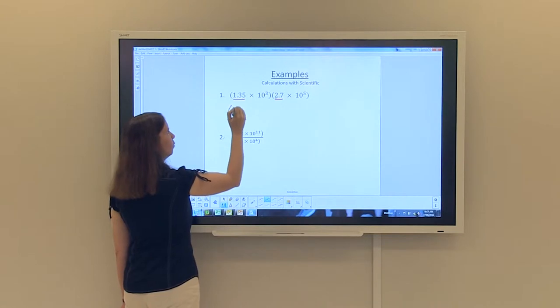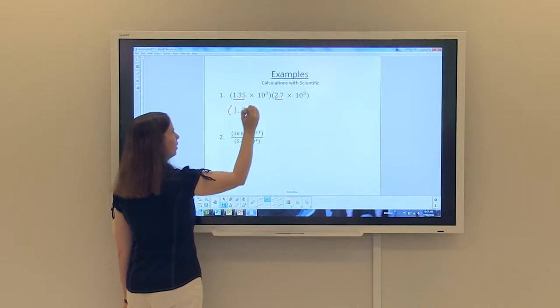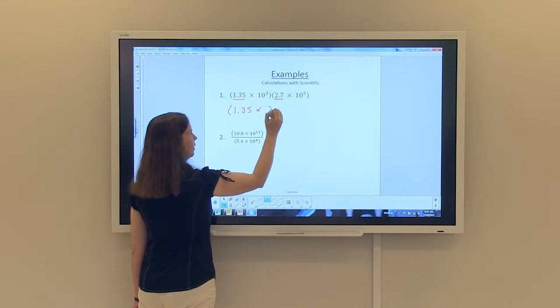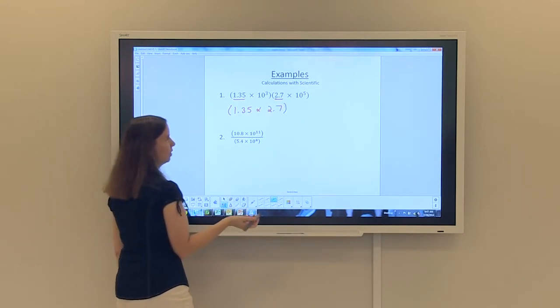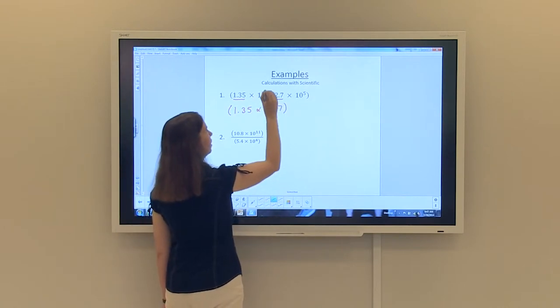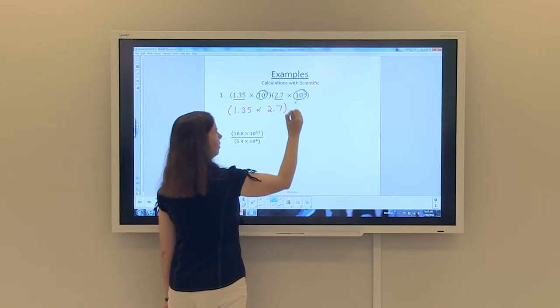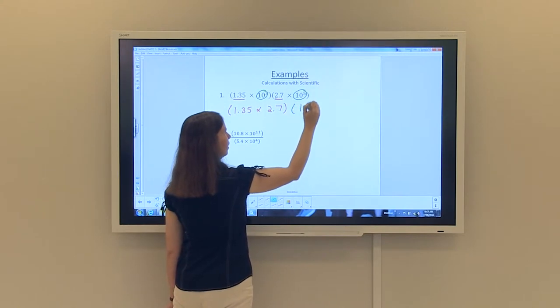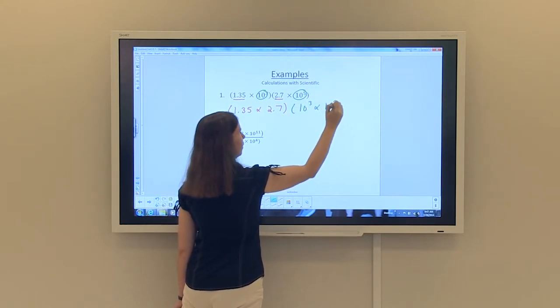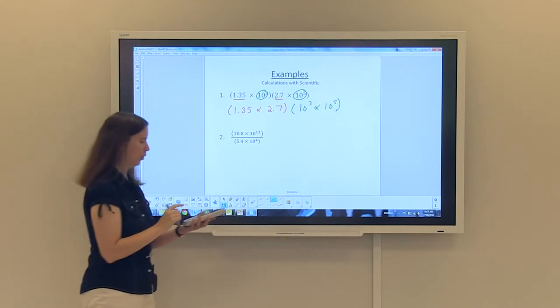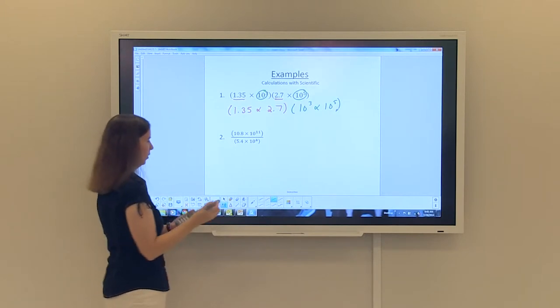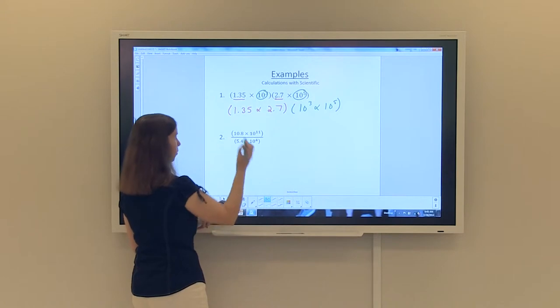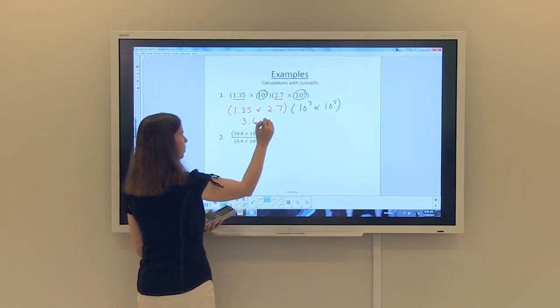So I'm going to put the 1.35 and the 2.7 together, the A values in both of those pieces. So I have 1.35 times 2.7. And then I'm going to do the same thing with the bases of 10, the 10 to the third and the 10 to the fifth. So 10 to the third times 10 to the fifth. I'm just going to use my calculator to do the red part, just the numbers. So 1.35 times 2.7 will give us 3.645.